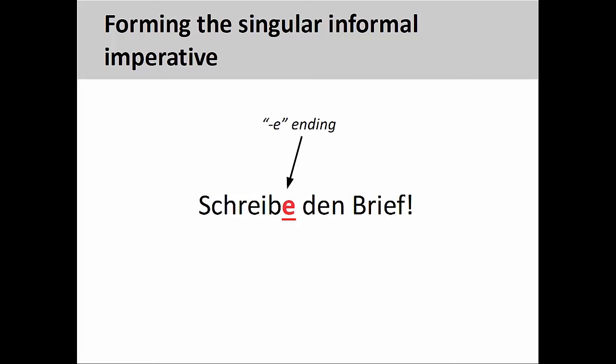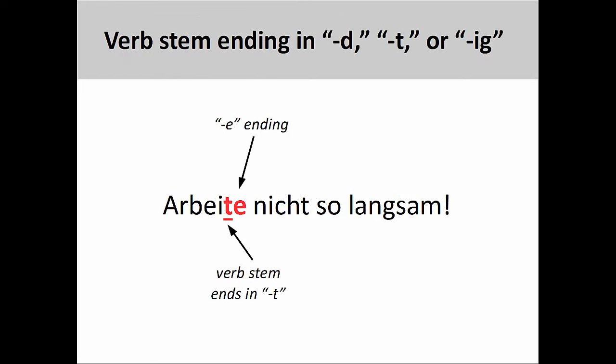Sometimes an optional -e ending is added to the end of singular informal imperative forms, such as schreibe den Brief. This ending is not optional, however, if the verb stem ends in -d, -t, or -ig. For example, since the verb stem in arbeiten, meaning to work, ends in a -t, we must add an -e to the imperative form: arbeite nicht so langsam — don't work so slowly.